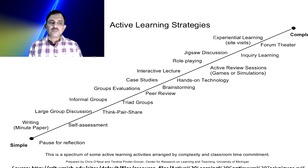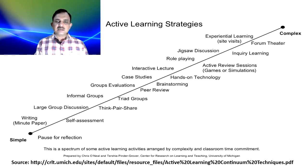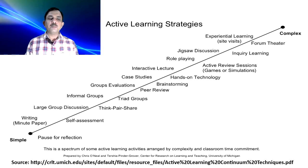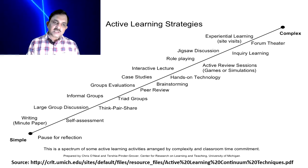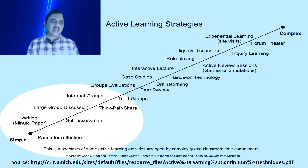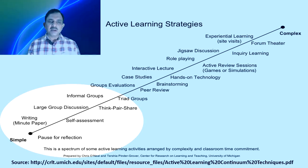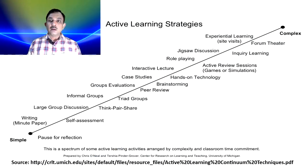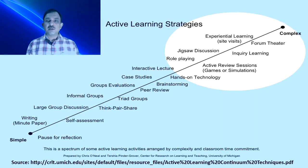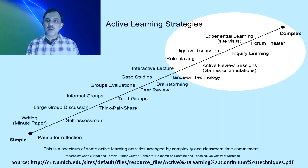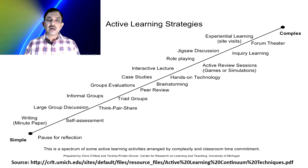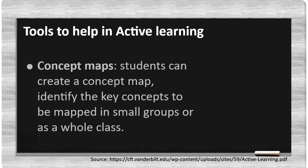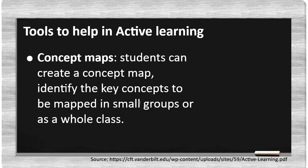There is no shortage of strategies in active learning. There is a spectrum of active learning activities developed by Chris O'Neill and Tertia Pender Grove, arranged from simple to complex. Simple activities include minute paper, pause, reflection, self-assessment, and think-pair-share. Complex activities include special learning forums, theater, inquiry learning, jigsaw technique, and role-playing. You can decide any strategy from this spectrum. There are also certain tools which you can use to help with active learning.